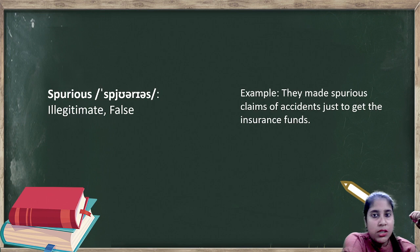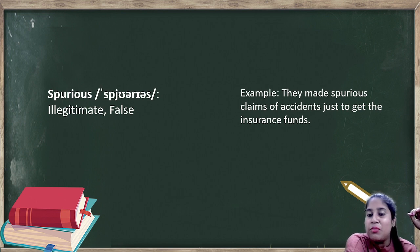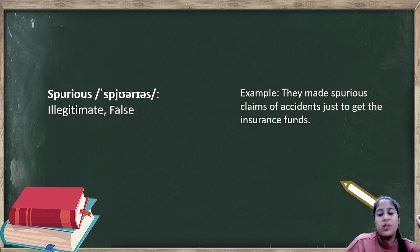Next word is spurious. Spurious means illegitimate. Illegitimate means illegal or false. Example: They made spurious claims of accidents just to get the insurance funds. Any kind of false or illegal comment or illegal case, that's spurious.